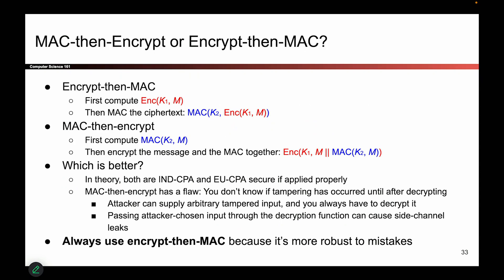These schemes actually have names, and the names are kind of what you'd expect. One of them is called encrypt-then-MAC, because you encrypt and then you MAC and you send both the encryption and the MAC of the ciphertext. The second idea is called MAC-then-encrypt, because you first compute the MAC and then you shove both the MAC and the message into the encryption. I always forget which is which, but thinking about the steps that it's telling you can be helpful.